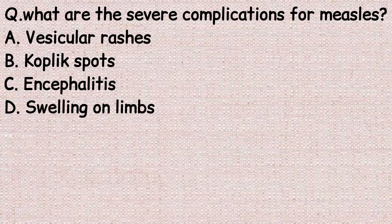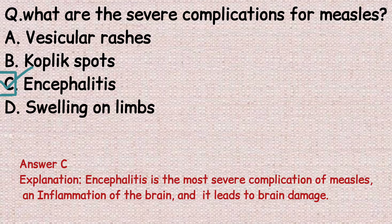The next question: what is the severe complication for measles? Option A: vesicular rashes. Option B: Koplik's spots. Option C: encephalitis. Option D: swelling on limbs. The correct answer is option C, encephalitis. Encephalitis is the most severe complication of measles — it is an inflammation of the brain and can lead to brain damage.